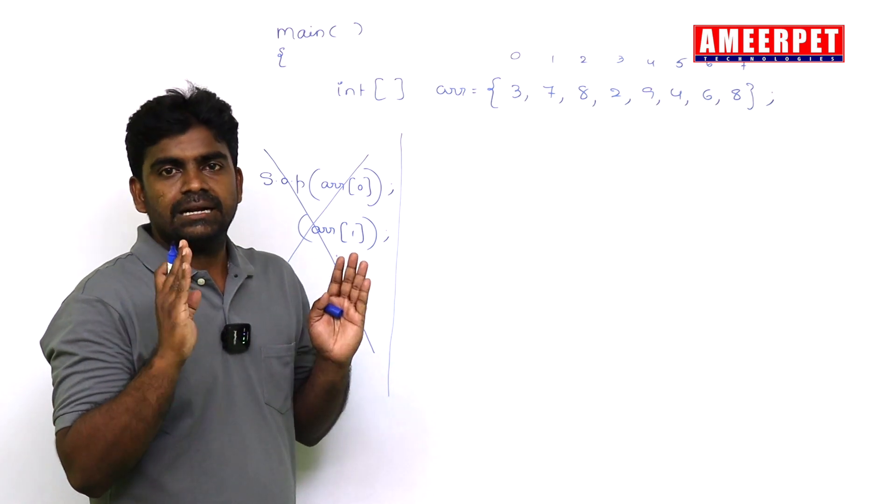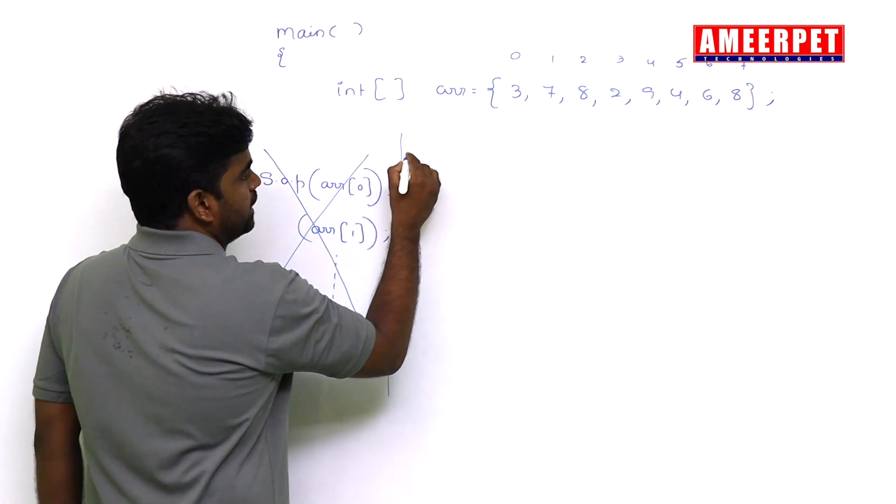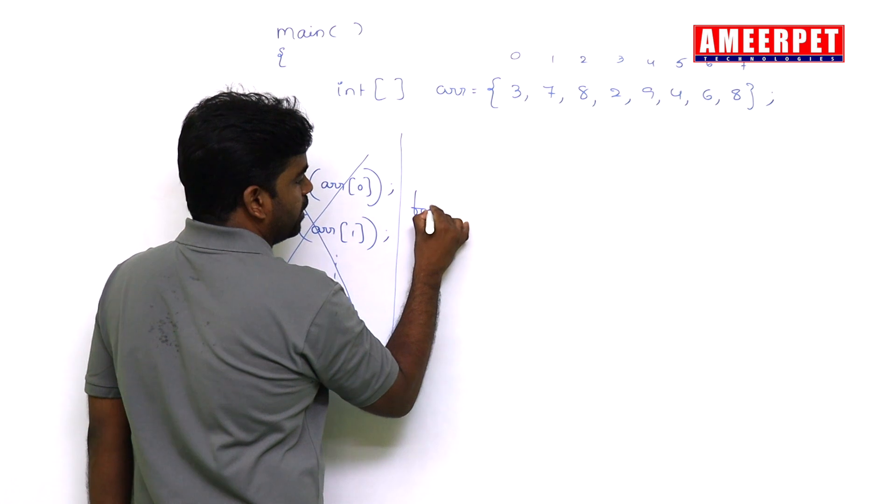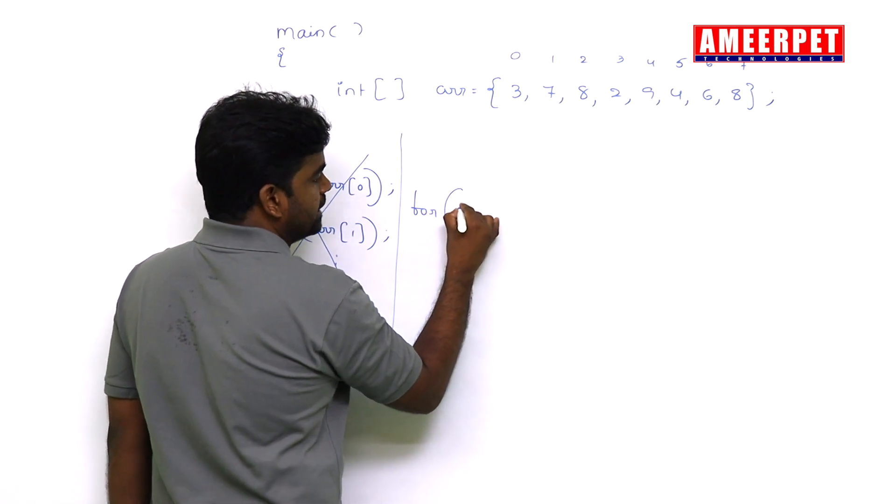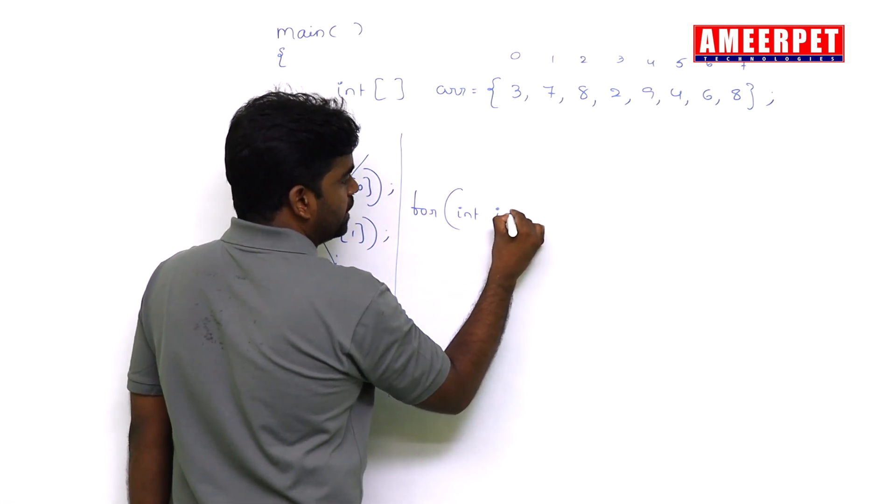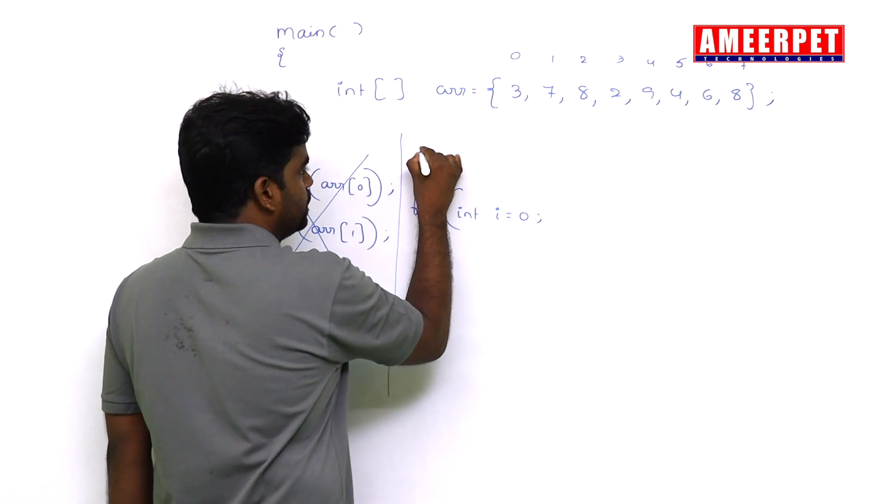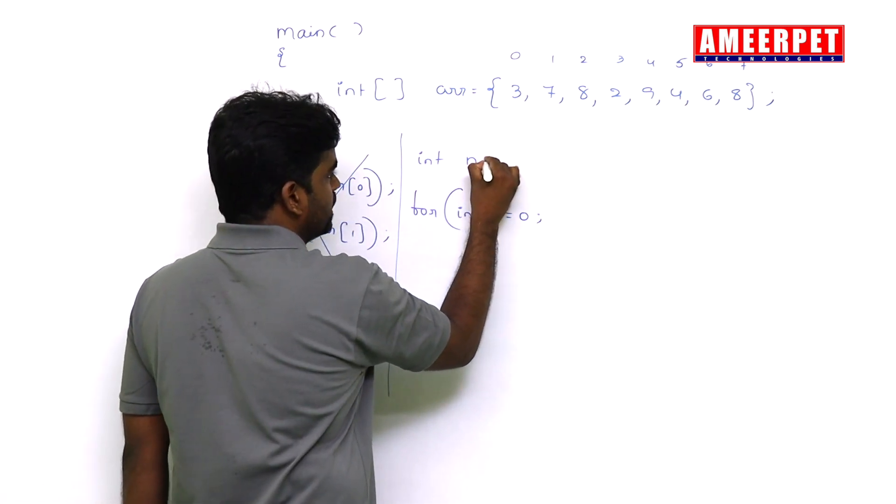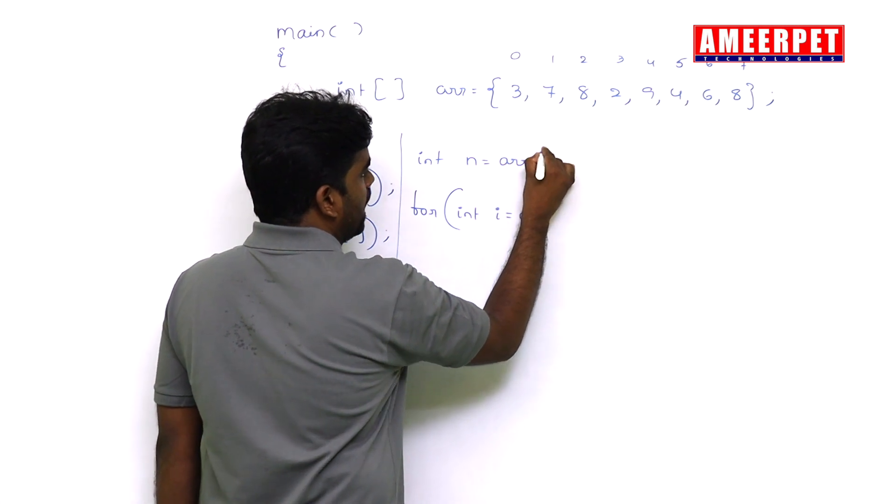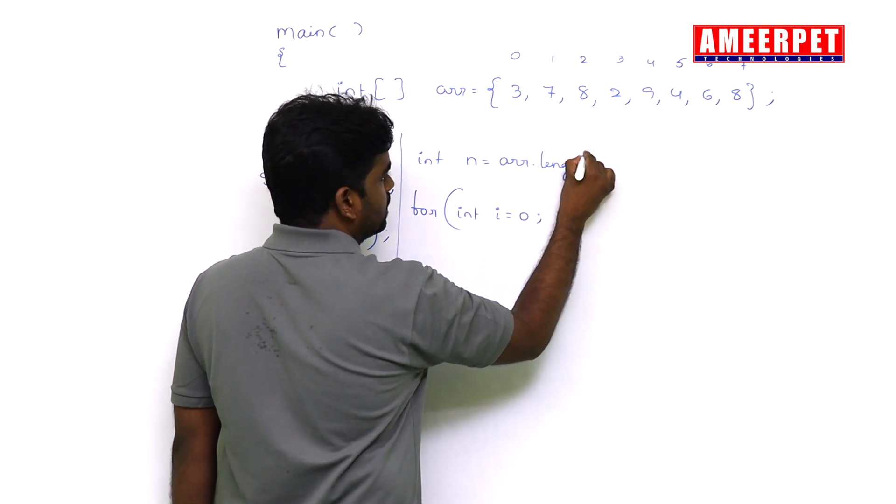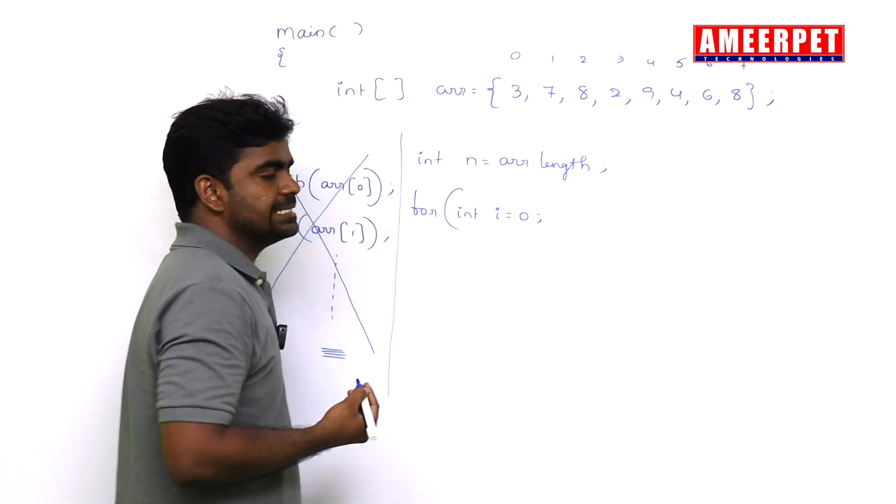No sir, I am taking that length first: int n = ar.length. ar.length, that is 8.